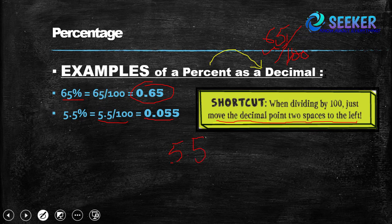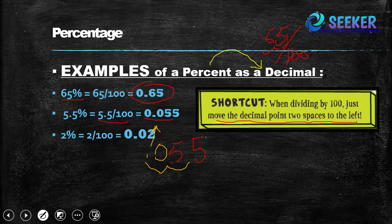For 5.5%, the decimal point moves two spaces to the left, giving 0.055. Similarly, 2 percent is equal to 0.02, and 50 percent is equal to 0.50.